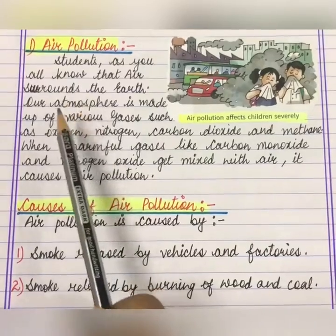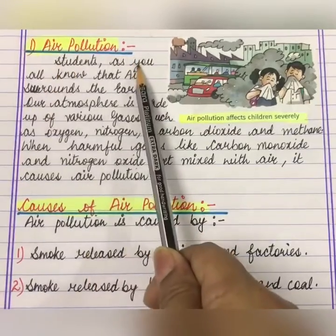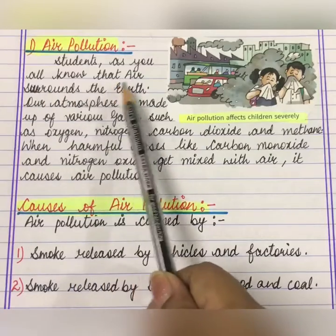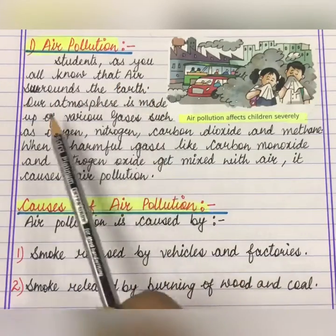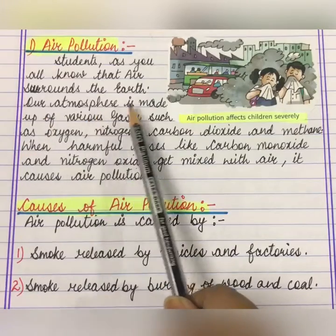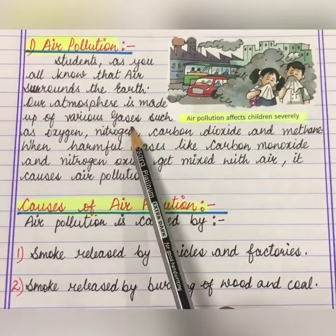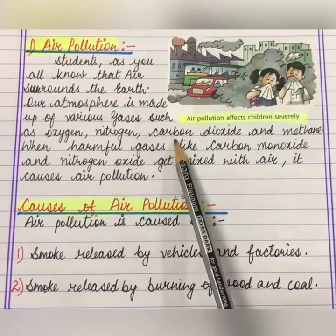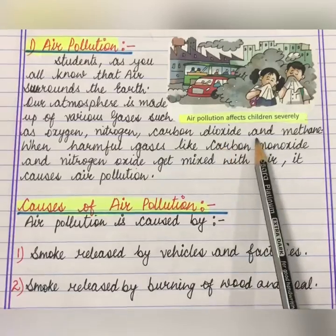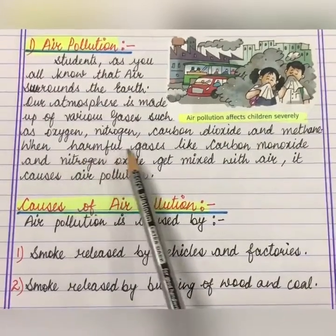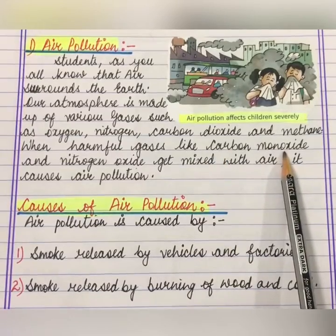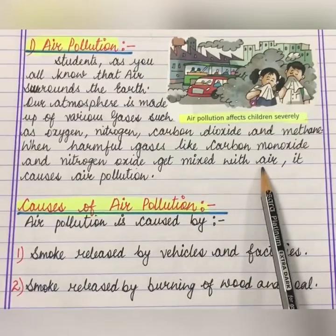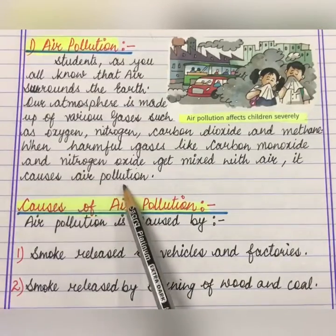First of all we will discuss about air pollution. As you all know, air surrounds the earth. Our atmosphere is made up of various gases such as oxygen, nitrogen, carbon dioxide and methane. When harmful gases like carbon monoxide and nitrogen oxide get mixed with air, it causes air pollution.